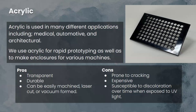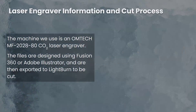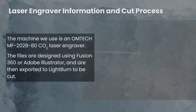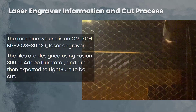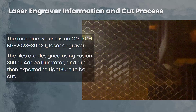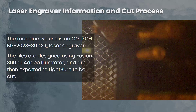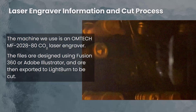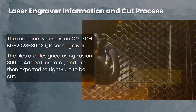Acrylic also degrades in UV. The way we cut it is using an Omtek MF 2028-80 CO2 laser engraver. Files are designed in Fusion 360 or Illustrator, then exported to a program called LightBurn — essentially laser engraver software — and then loaded onto the machine and cut out, as you see here.